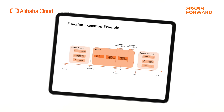Let's take a look at the execution process of Function Compute. As shown in the figure, when a function is called for the first time, Function Compute needs to dynamically schedule an instance, download and decompress the code, and start the instance to obtain a code environment that can execute the function. Only then does it actually execute the user's initialization function and the business logic on the allocated instance. This process of scheduling and starting an instance is known as the cold start process.